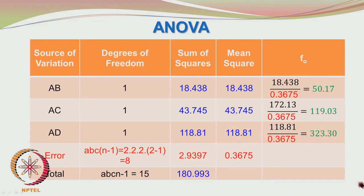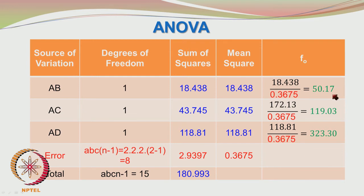When you look at all of these, it appears that all 3 binary interactions — AB aliased with CD, AC aliased with BD, and AD aliased with BC — are significant by looking at the F values. They are lying in the rejection region and hence we can reject the null hypothesis which says that these binary interactions are insignificant. We are rejecting the null hypothesis which says that the binary interactions are unimportant.